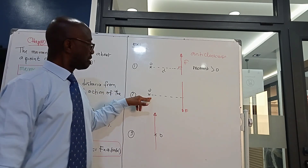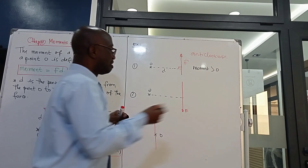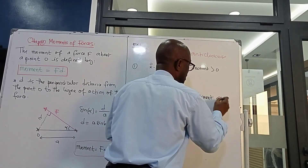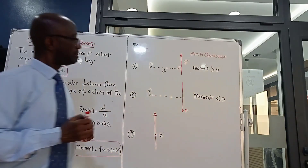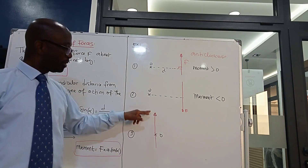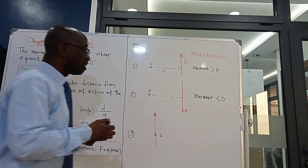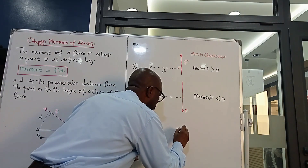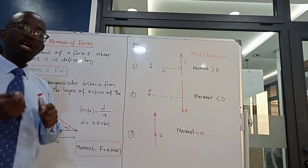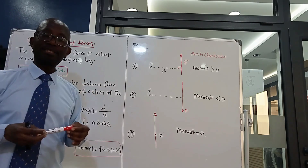When the direction of the force is clockwise, the moment is negative. When the force passes through point A, the distance D is zero, so the moment will be zero. That concludes this lesson — if you have any questions, let me know.